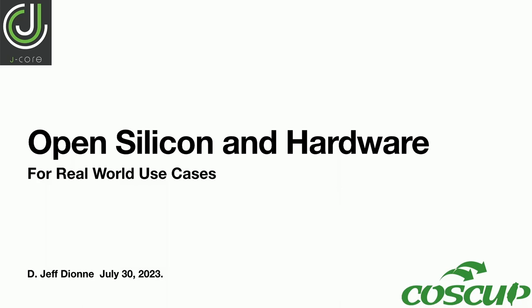Thank you very much. I'm Jeff Dion, from the J-Core project and also Core Semiconductor. Today we're going to talk about the J-Core processor, the platform that we built, the experiences we had doing that, and what it means to build completely open silicon — completely open devices, not only chips, but also products based on open source.